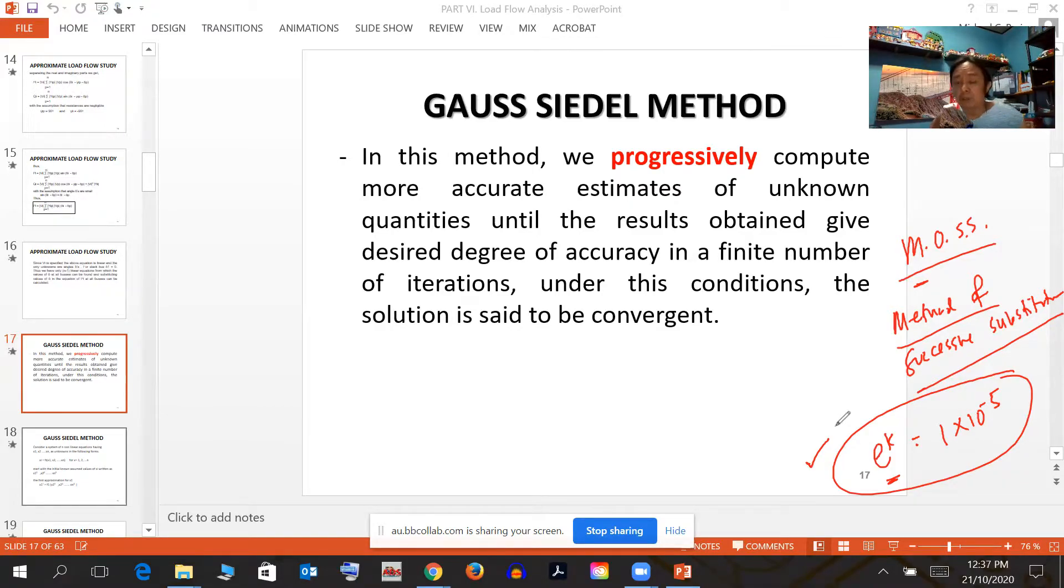What happens is probably there's a large imbalance between generation and loading. Generation must equal your load. Anyway, with the Gauss-Seidel method, we won't take all iterations. If it takes 20 iterations to converge, that's too many. Maybe 4 or 5 iterations will do for this purpose.